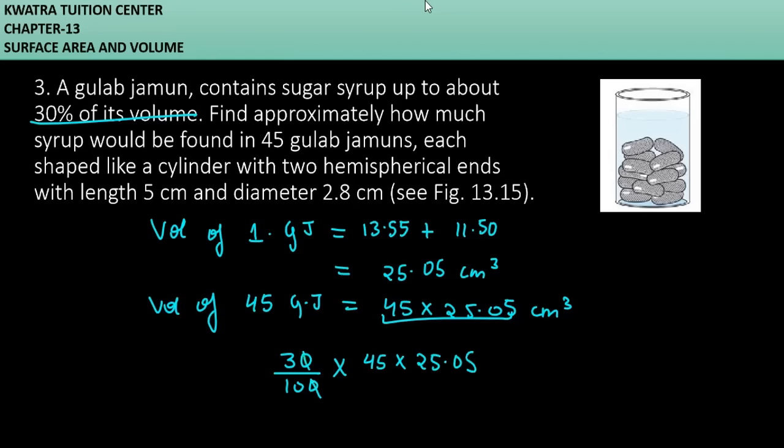So you can cancel 0 with 0 and this is the syrup amount. यह क्या रहेगा आपका, syrup का amount कितना present होगा? So now multiplying this we'll get 338.18 cm³ और इसका approximate कितना होगा? 338 cm³. So yes, this is the syrup amount present within 45 gulab jamuns. So let's now move to question no. 4.